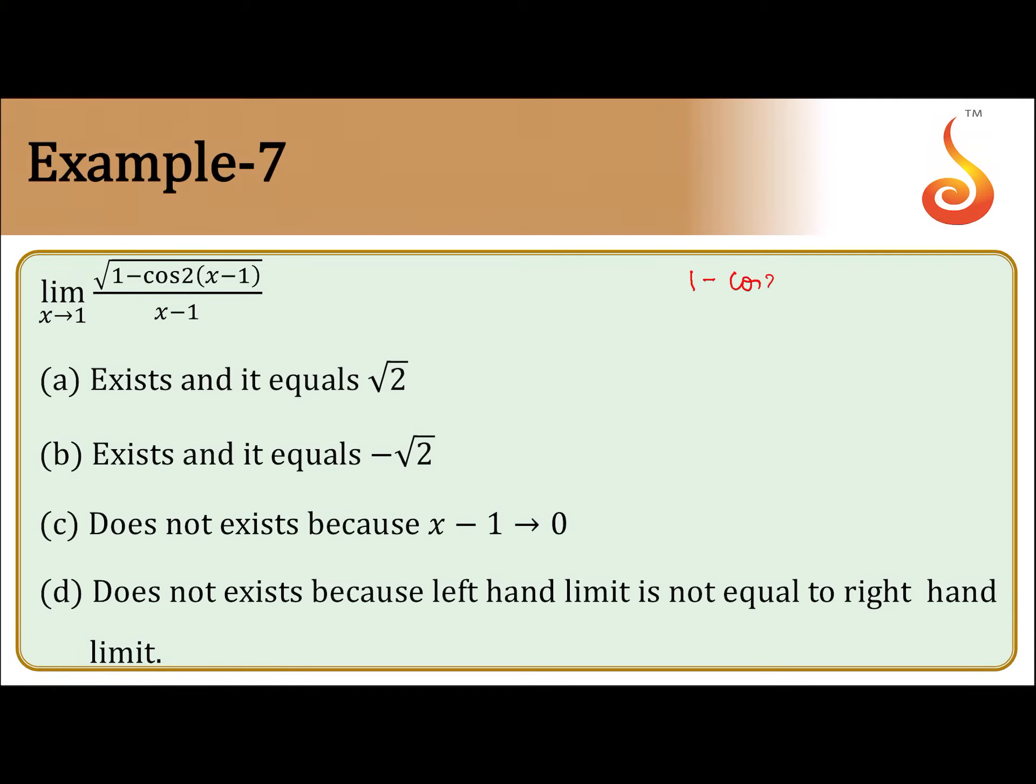1 minus cos 2x is 2 sin square x - that is a formula we studied. If we observe this limit x extending to 1, under root of 1 minus cos 2 times (x minus 1) divided by x minus 1.